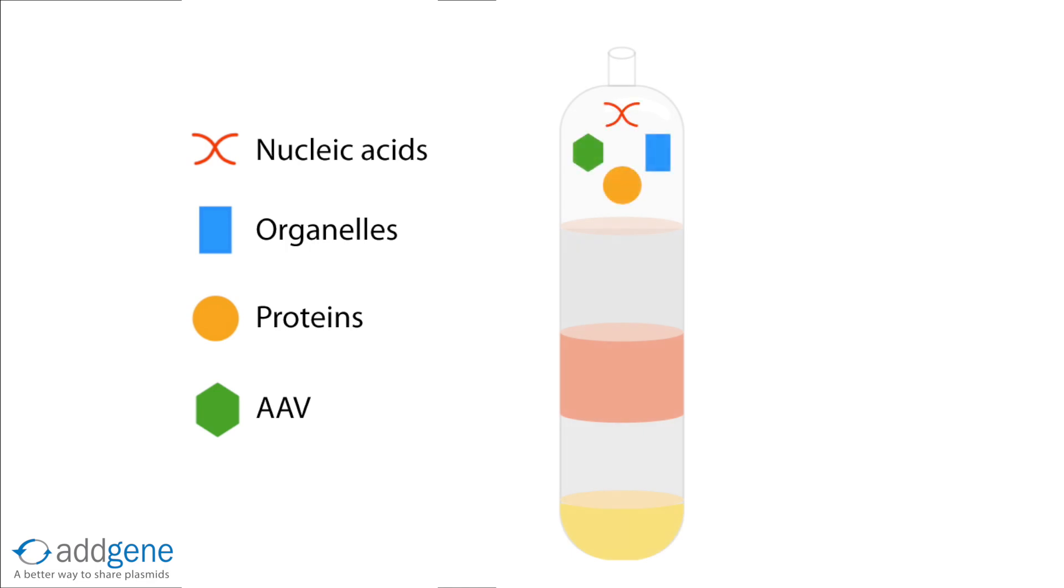While the individual layers will remain undisturbed during centrifugation, the macromolecules from your viral supernatant at the top of the column will migrate through the column and take up residence within these layers depending on their densities. The molecules will continue to migrate until their density is equal to the buoyant force of the solution, which will happen once their density matches that of the surrounding gradient medium.